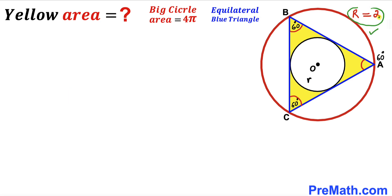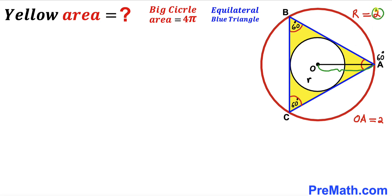In this next step, I've connected center O with vertex A. We can see that OA is the radius of the larger circle, and since we know that radius is 2, the length OA turns out to be 2 units.